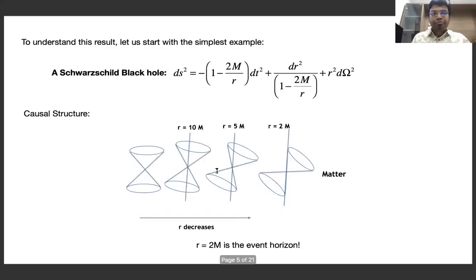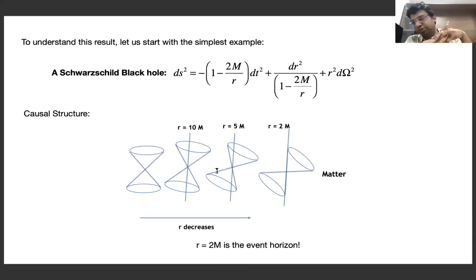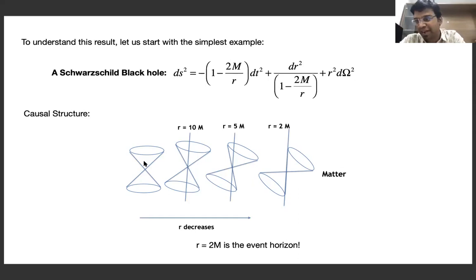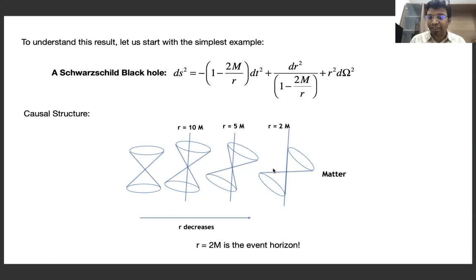To understand this result, we start with the Schwarzschild black hole metric. The causal structure is well known: at large distances the light cone is similar to flat Minkowski space; as you move closer, the light cone tilts due to gravity. At r = 2M, the surface itself is null. Once inside r = 2M, you must go inward and ultimately meet the singularity in finite proper time — there is no way to come back.